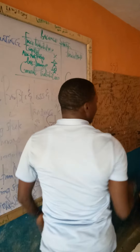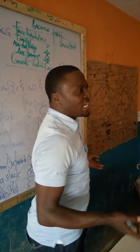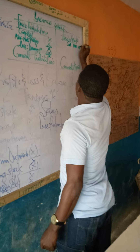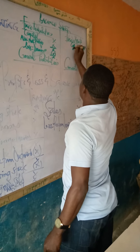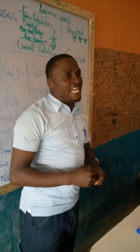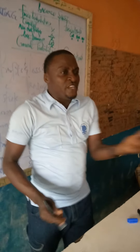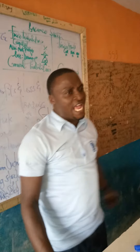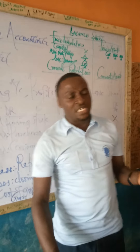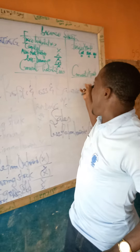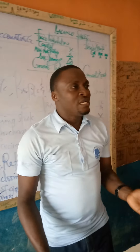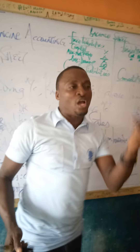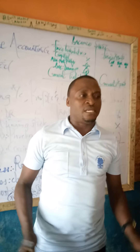Then we have fixed assets. Under fixed assets, we have three aspects in terms of additional information: cost, depreciation, and net book value. Fixed assets are properties that can last for a long period of time, such as buildings, equipment, furniture and fittings, and premises. Current assets are properties that can last for a short period of time — we have stock, debtors, cash in hand, and cash at bank.